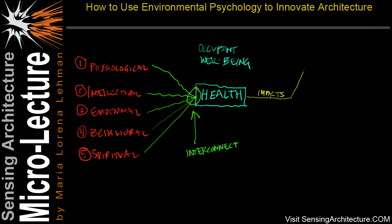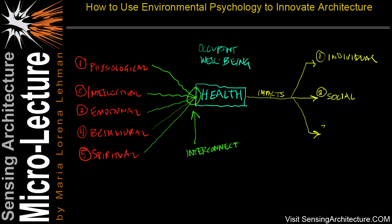First is the individual interaction, where occupants are interacting or spending time with themselves. As they do this, they are physiologically, intellectually, emotionally, behaviorally, and or spiritually being impacted. The second is social interaction, where occupants spend time and interact with each other. And the third is environmental interaction, where occupants interact more directly with the environment.